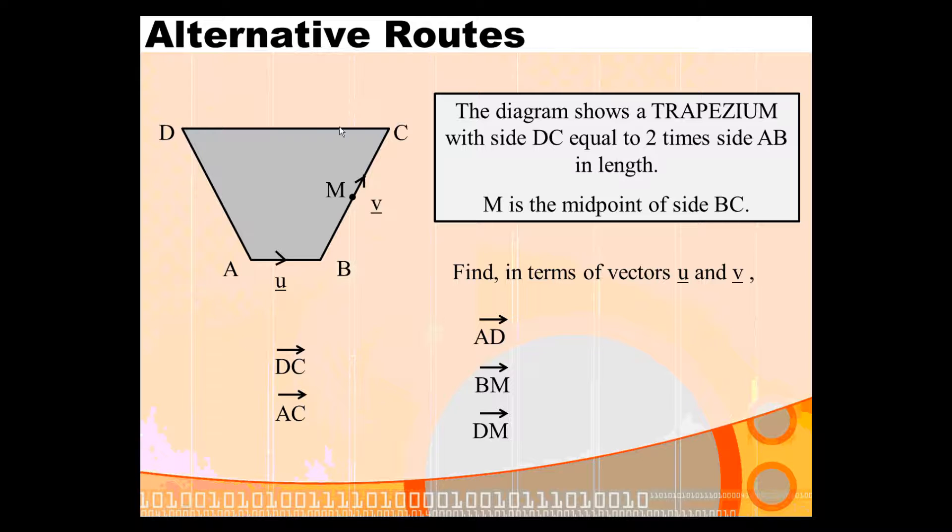To go from D to C, you are going twice as far as you are from A to B, in the same direction. So DC is just 2U. To go from A to C, you go from A to B to C. So it's just the sum of the two vectors you're given: U plus V.